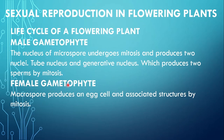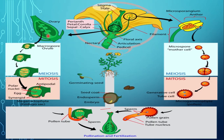Let us see the formation of female gametophyte. Macrospores produce an egg cell and associated structures by the process of mitosis. Flower ke female part mein ovary ke ovules mein diploid macrospore mother cells present hote hain. In macrospore mother cells mein as a result of meiosis, four haploid macrospores bante hain. Then in macrospores mein mitosis ke result mein egg cell aur kuch associated structures bante hain, and this is called the female gametophyte. Is tarah microspore se male gametophyte aur macrospore se female gametophyte ki formation hoti hai.